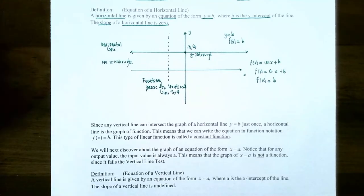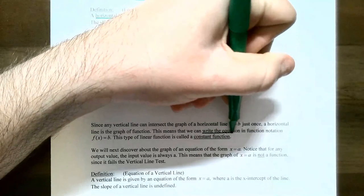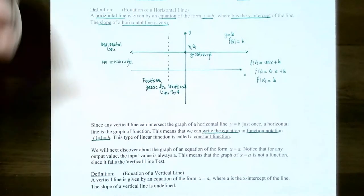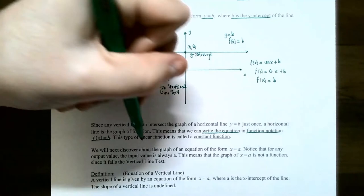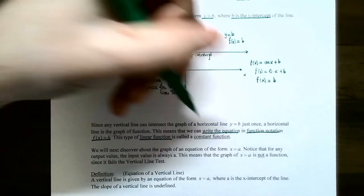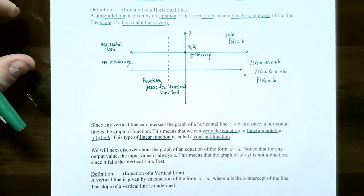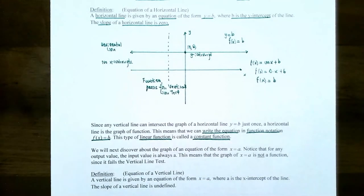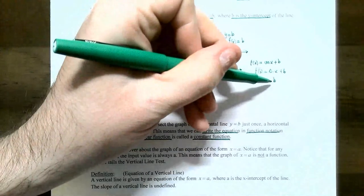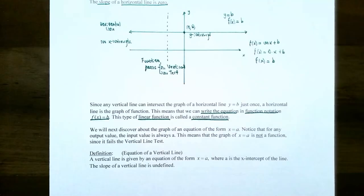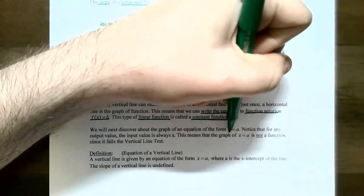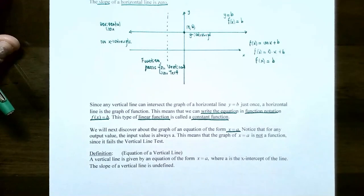Since horizontal lines are functions, we can write the equation using function notation as f of x equals b. Another common way of referring to horizontal lines is that they are linear functions because they can be written in y equals mx plus b form. These are called constant functions because the function is just equal to a constant.